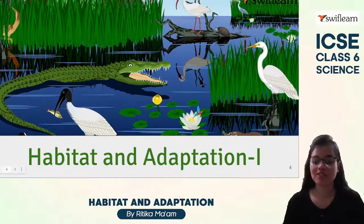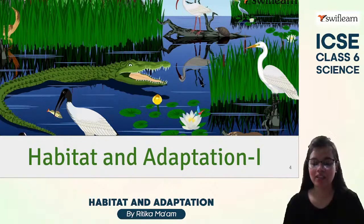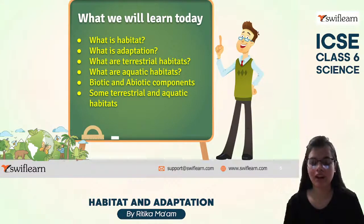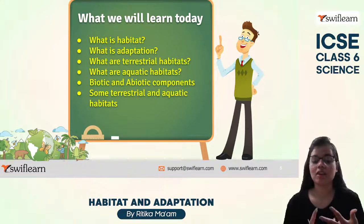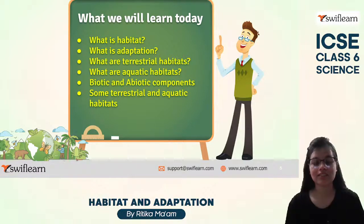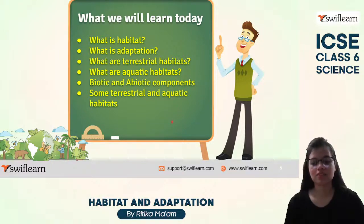Today we are going to study about Habitat and Adaptation. It is our very first session on this topic. The things we are going to cover in this chapter are: habitat, adaptation, what is terrestrial and aquatic habitat, what are biotic and abiotic components, and some examples of terrestrial and aquatic habitats.